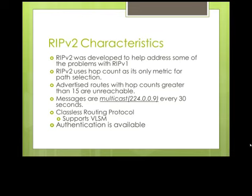RIPv2 uses the hop count as its only metric, just like RIPv1 did. Any routes advertised with hop counts greater than 15 are going to be considered unreachable — the same as with RIPv1.